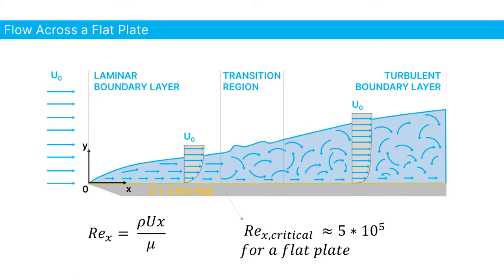Now as the air moves across the plate, the distance travelled since the leading edge increases. And if we use this distance travelled from the leading edge as the characteristic length for our Reynolds number calculation, it's clear that the Reynolds number will keep increasing as we travel across the plate.